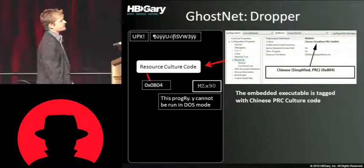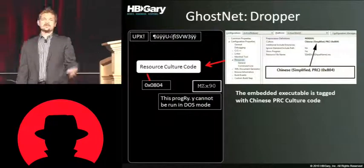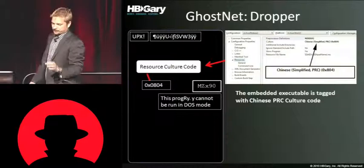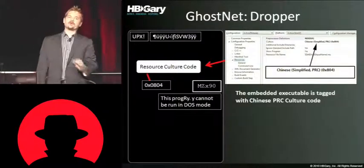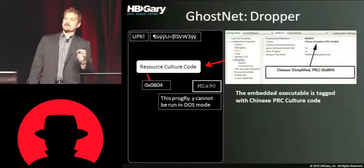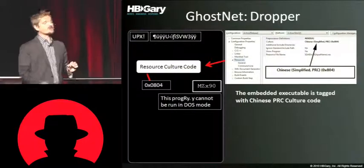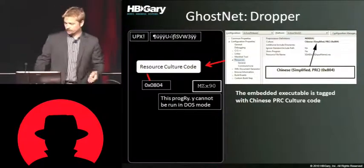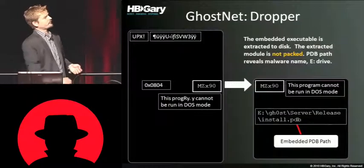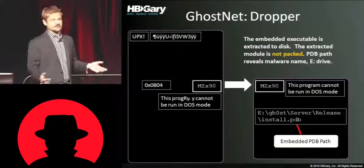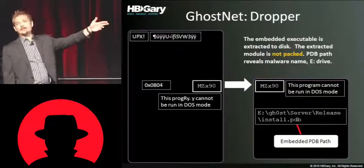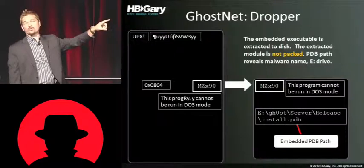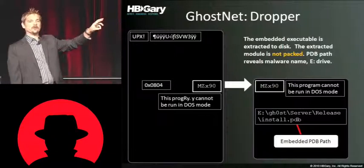Right in front of that embedded resource is something called a resource culture code. In this binary, it's set to Chinese Simplified PRC. That would only be set if the developer specified it on purpose, or he's using a Chinese version of Dev Studio — and it's probably the latter. So this is a very good indicator that the developer spoke Chinese as his primary language. The secondary binary pops out unpacked, which is great. And right away we can see what's called a PDB path — something that would have been easy to strip, but the bad guy didn't do it. We can actually see on his drive where he's storing the source code for this malware.